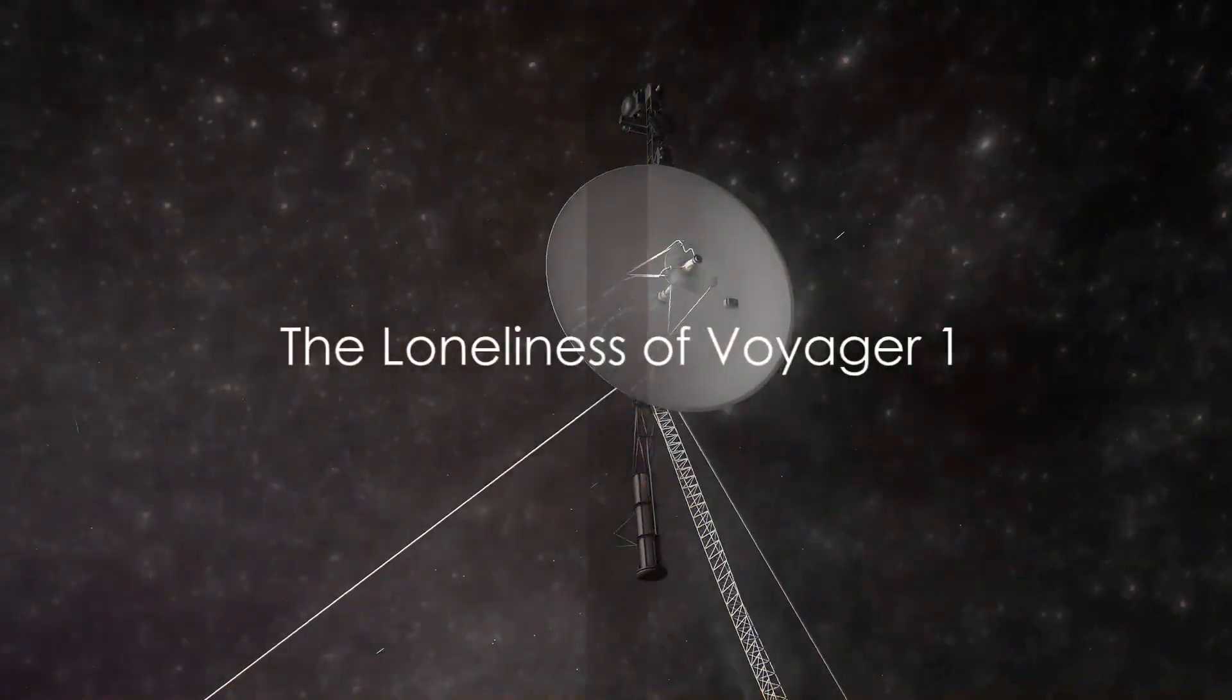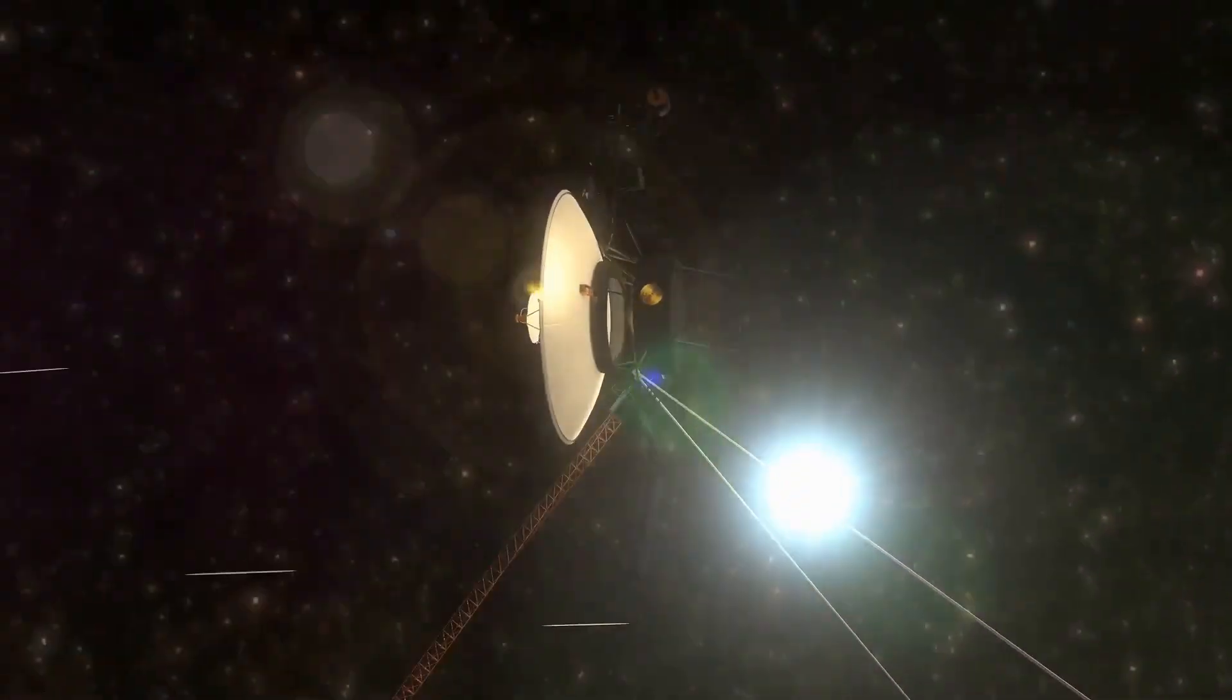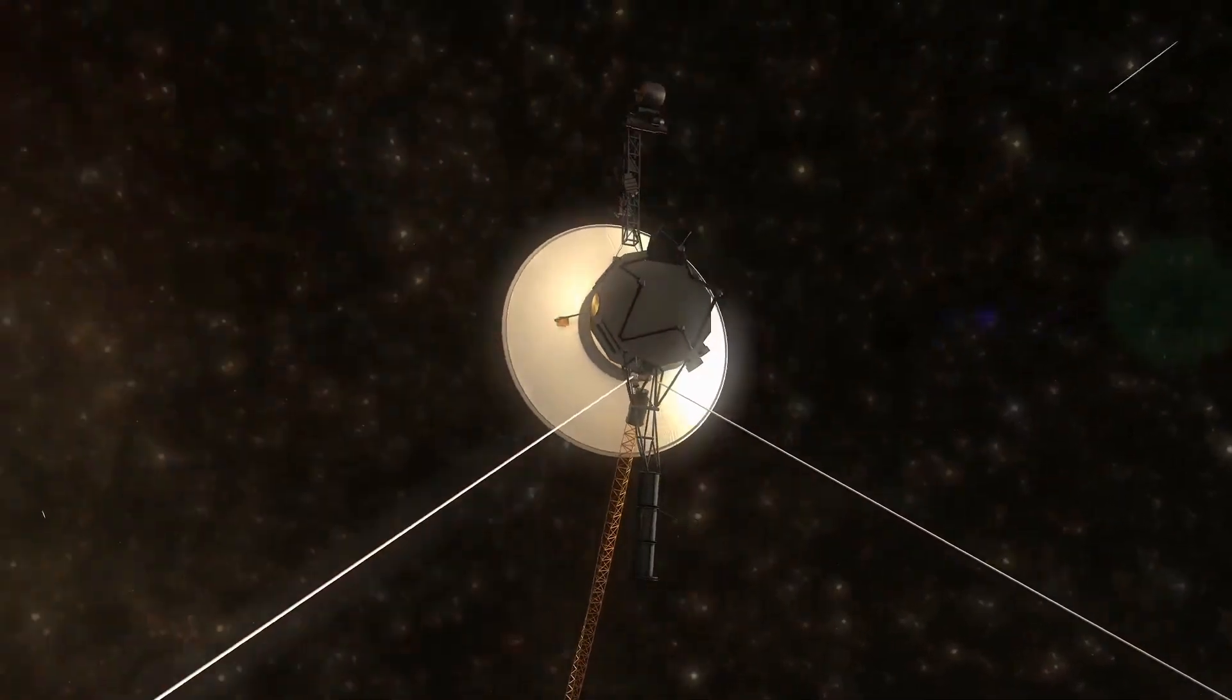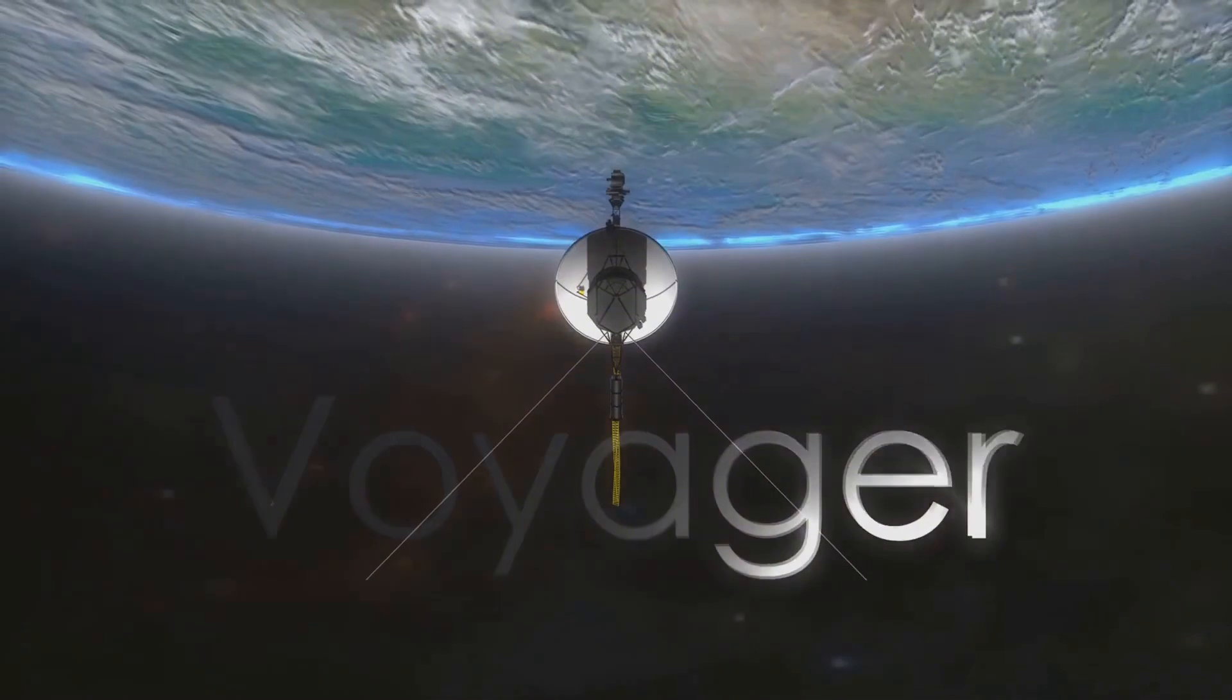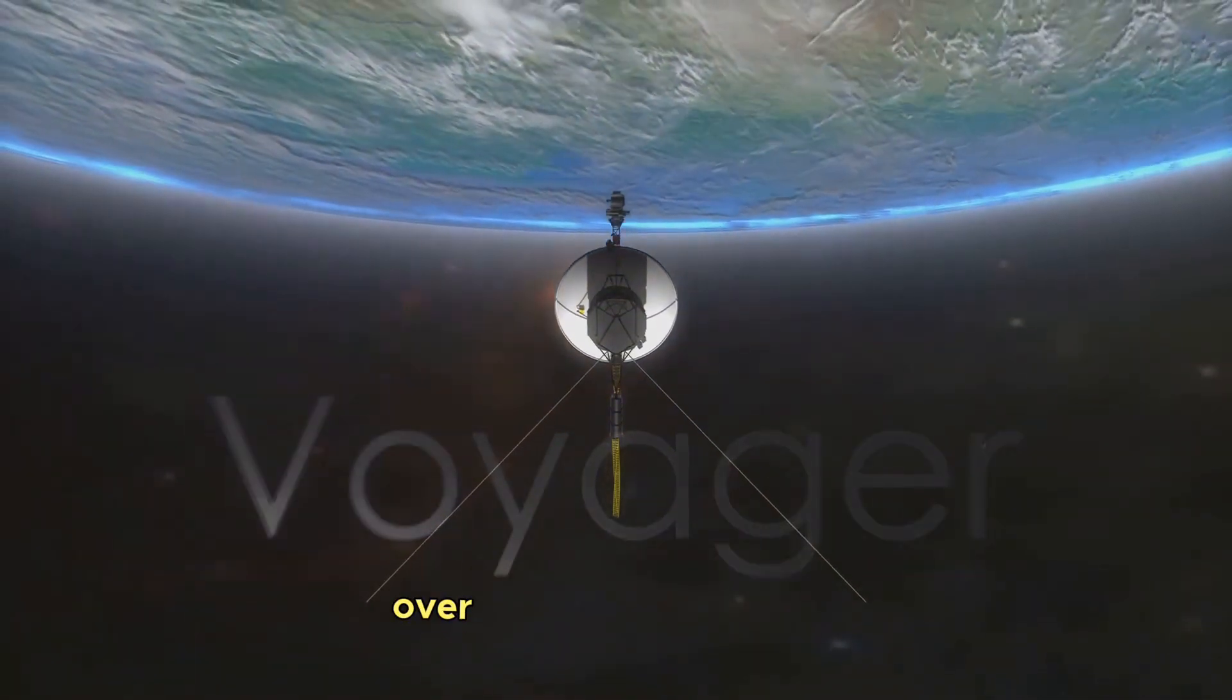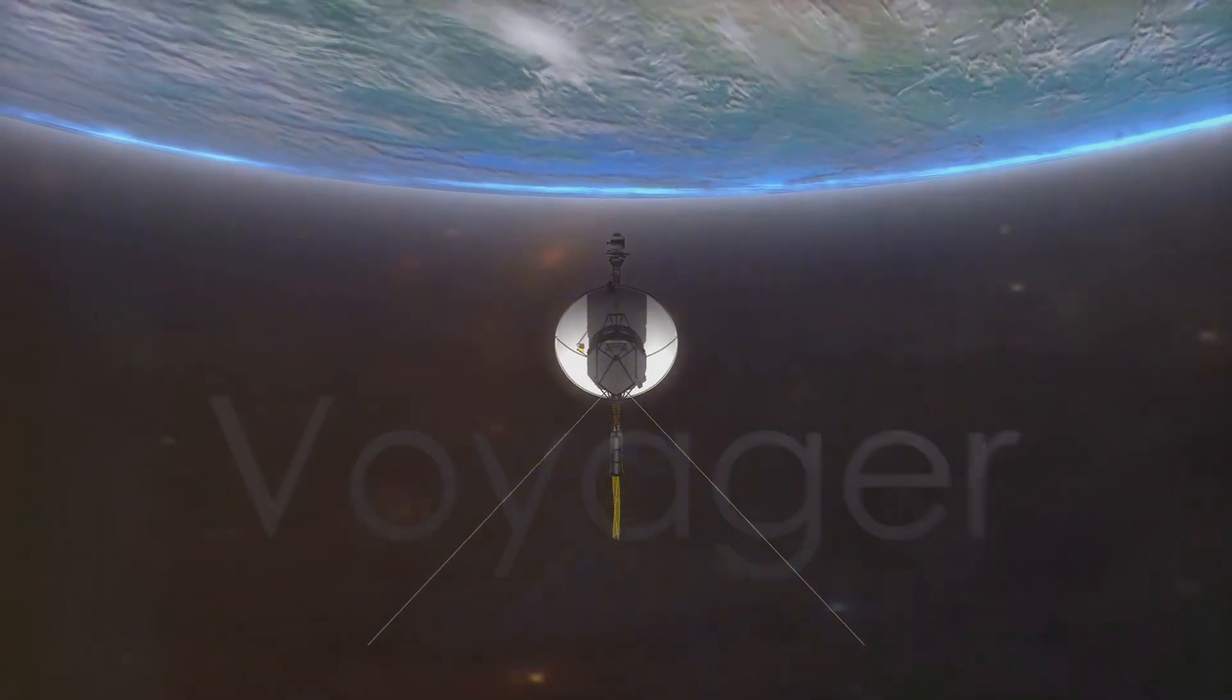Ever feel like you're alone in the universe? Imagine how Voyager 1 must feel. Launched back in the late 70s, this little spacecraft has been wandering the cosmos for over four decades. It's now the most distant human-made object from Earth, over 13 billion miles away. That's like traveling around the Earth over half a million times.